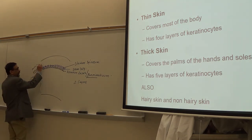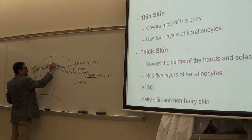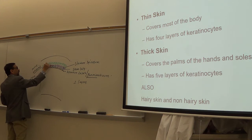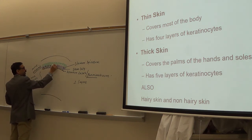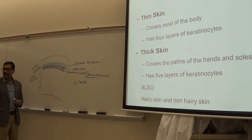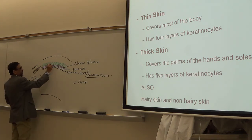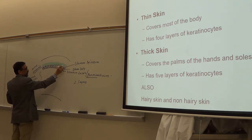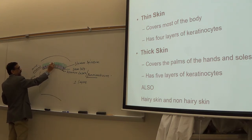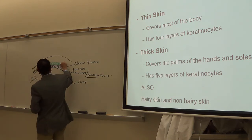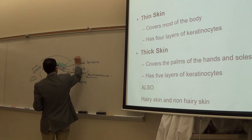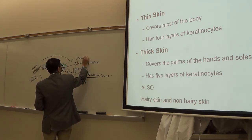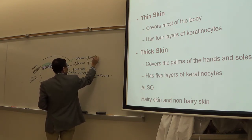Then you have a layer of cells filled with granules — chemical granules. These cells are filled with two types of granules: keratohyaline and laminated granules. That's why this layer is called stratum granulosum.